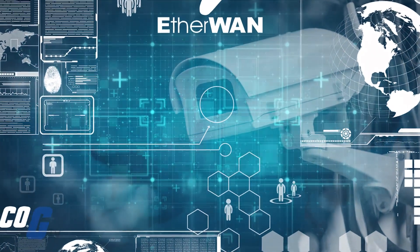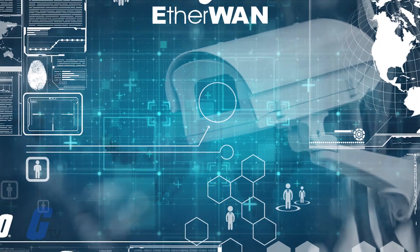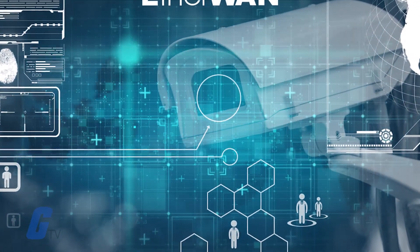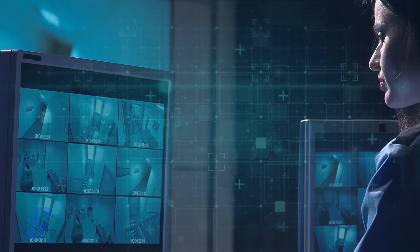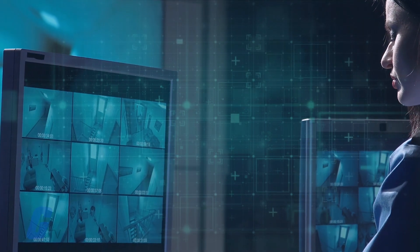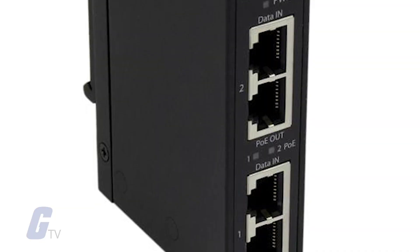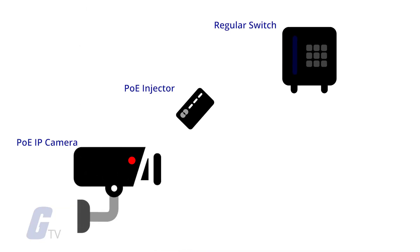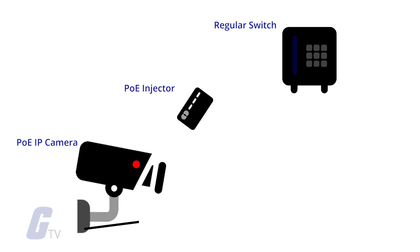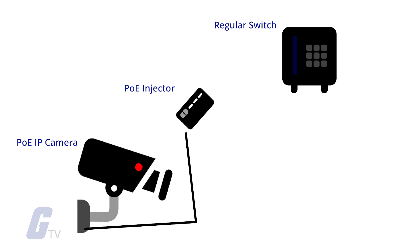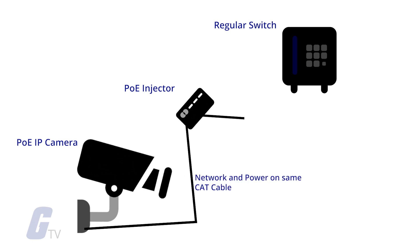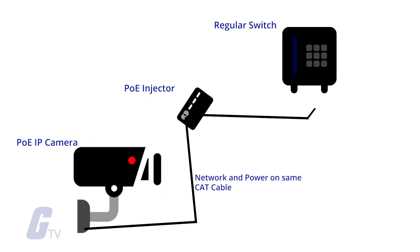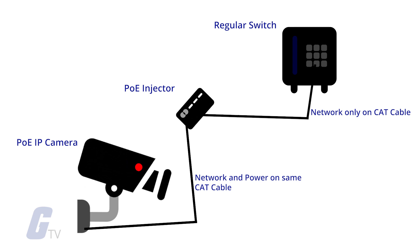Another option to add PoE capability to a non-PoE network link is by using a mid-span, also known as a PoE injector. These are useful in applications where only a few PoE compatible ports are needed, or it would not be feasible to completely replace your switches.